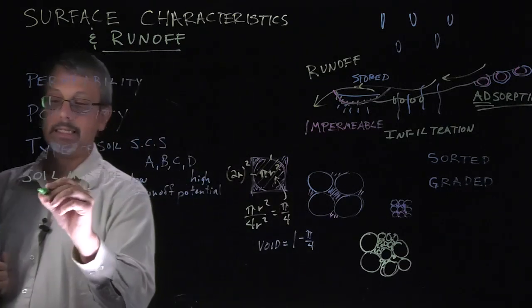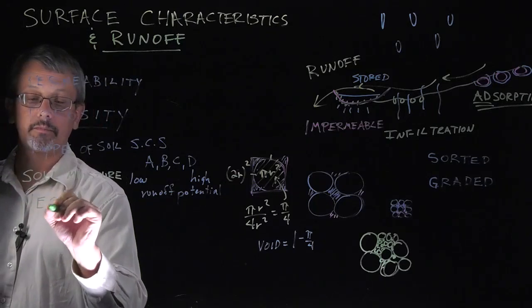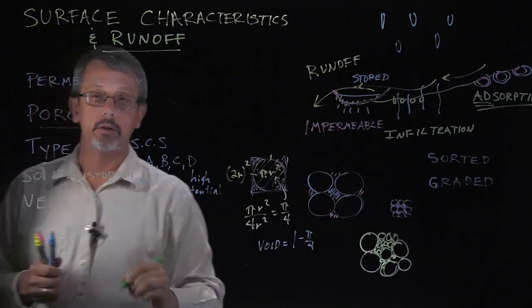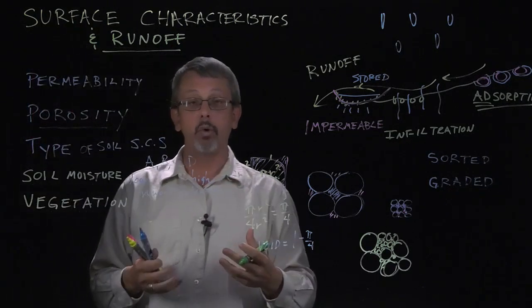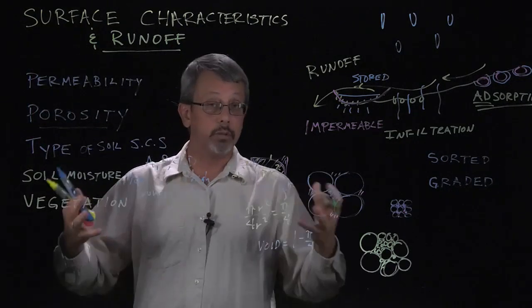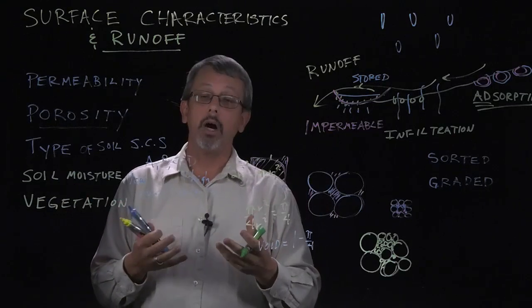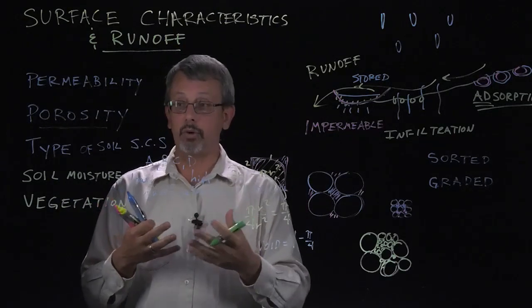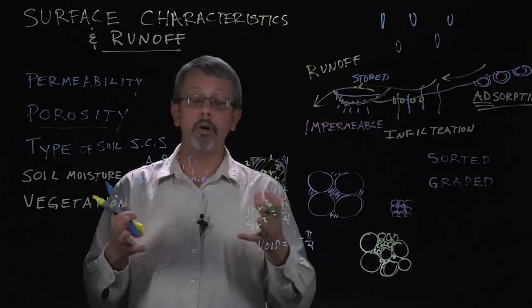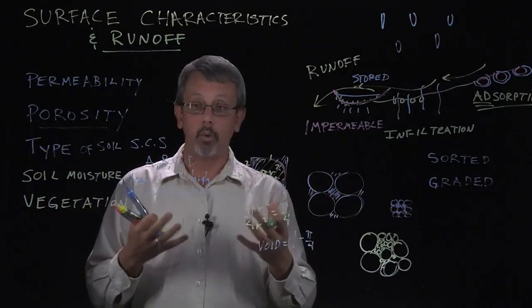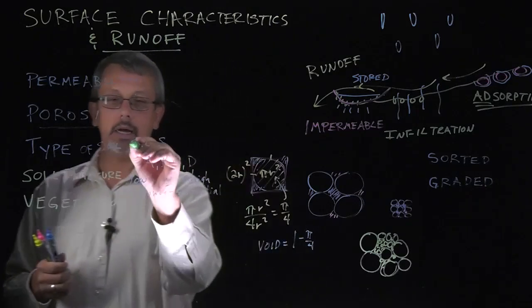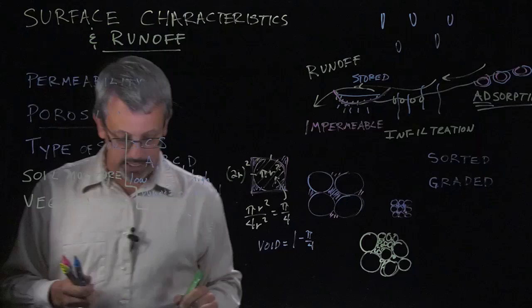The existence of vegetation. Plant life affects the amount of water that's going to stay locally because the plants will absorb and use some of the water. Also the presence of roots and even dead plant life is going to affect the soil characteristics and whether or not they contain or keep the water in place. So the presence of vegetation is also another piece that we need to look at.